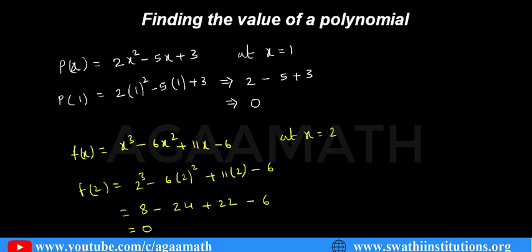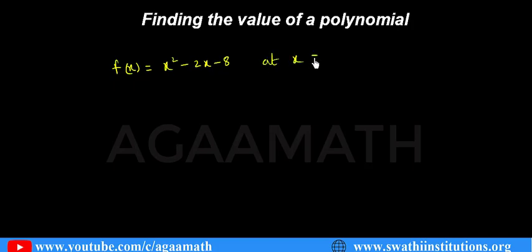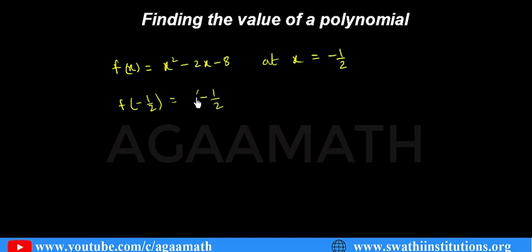Let me come with one more example. If f of x equals x squared minus 2x minus 8, you have to find the value of this polynomial at x equals to minus 1 by 2. So f of minus 1 by 2 means in the place of x we substitute minus 1 by 2. That gives minus 1 by 2 whole squared minus 2 of minus 1 by 2 minus 8.